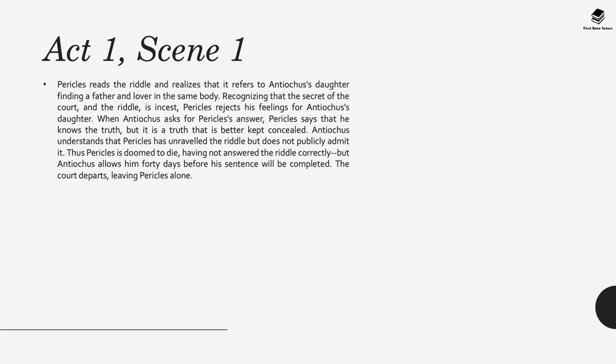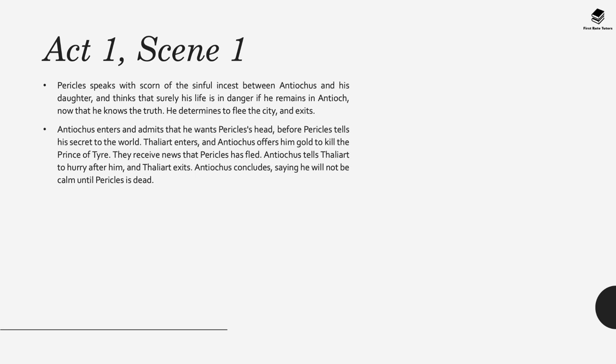Pericles reads the riddle and realises it refers to Antiochus's daughter — finding a father and lover in the same body. Recognising the secret is incest, Pericles rejects his feelings. When Antiochus asks for his answer, Pericles says he knows the truth but it is better kept concealed. Antiochus understands Pericles has solved the riddle but does not publicly admit it. Pericles is thus doomed to die, though Antiochus allows him 40 days before the sentence is completed. Pericles speaks of his scorn for the incest and determines to flee the city. Antiochus then orders Thaliart to kill Pericles before he can tell the world the secret.